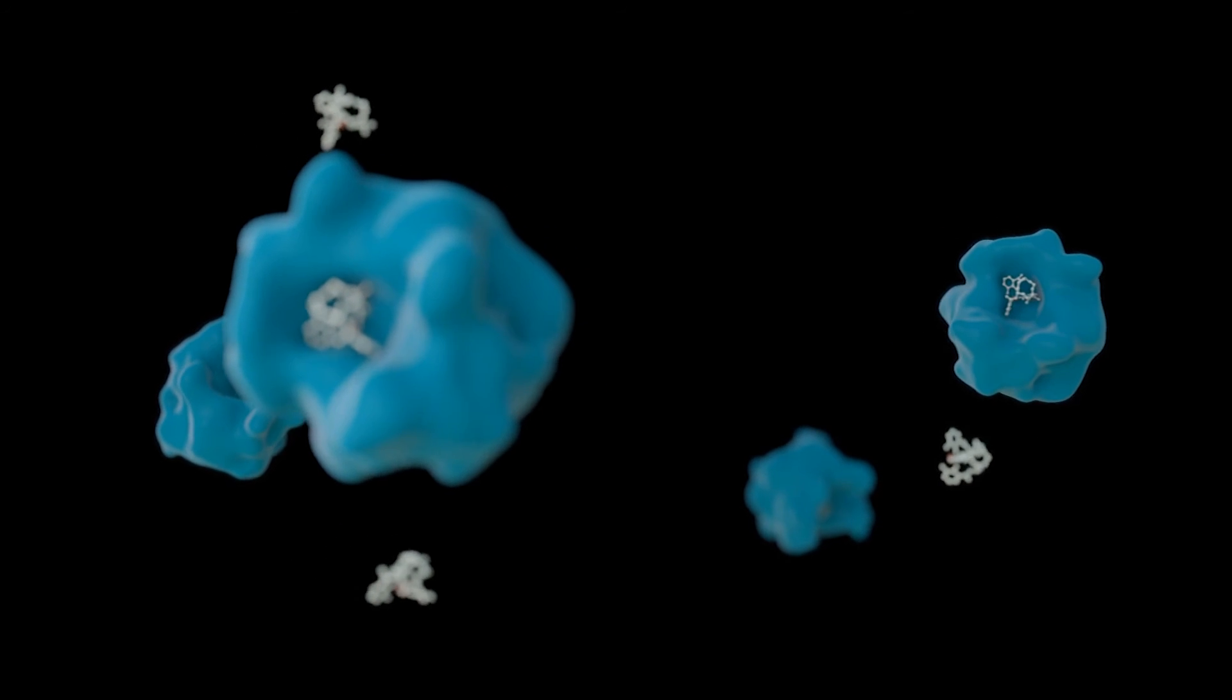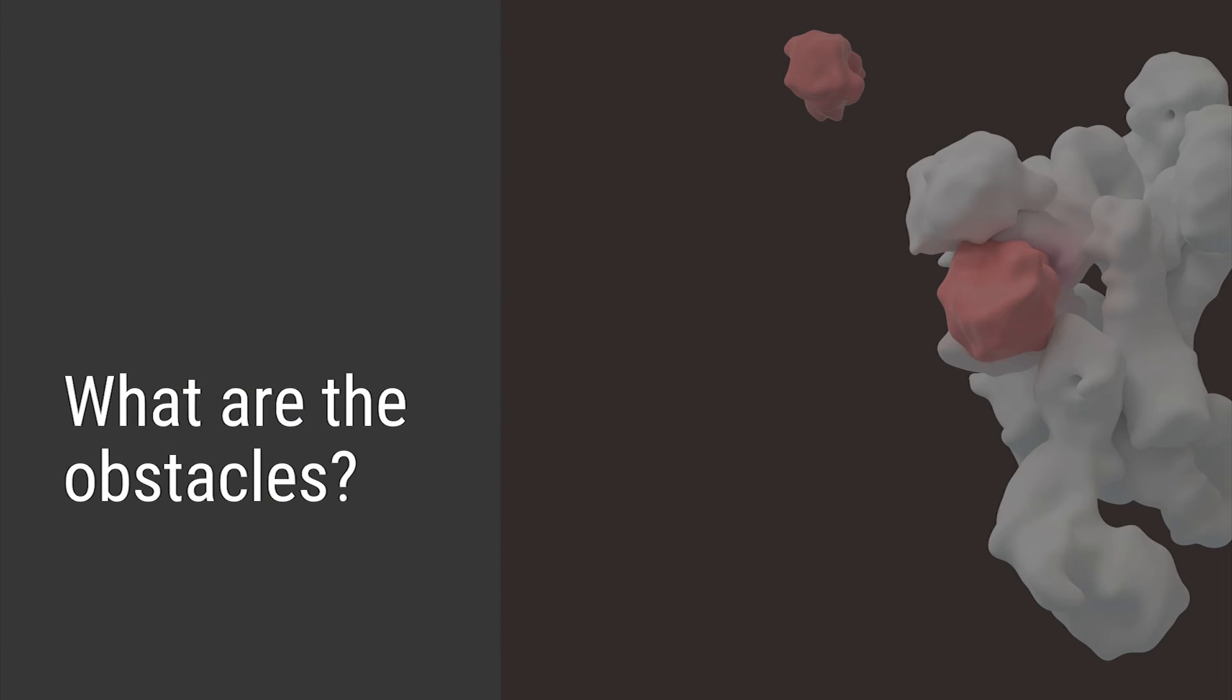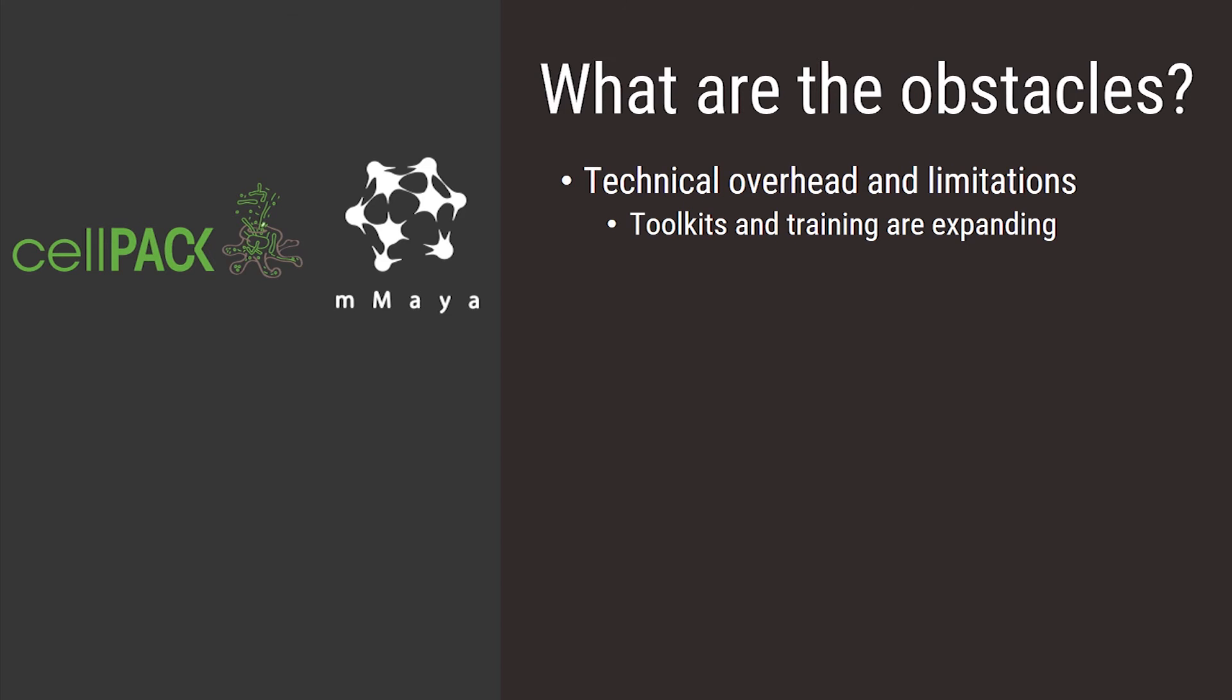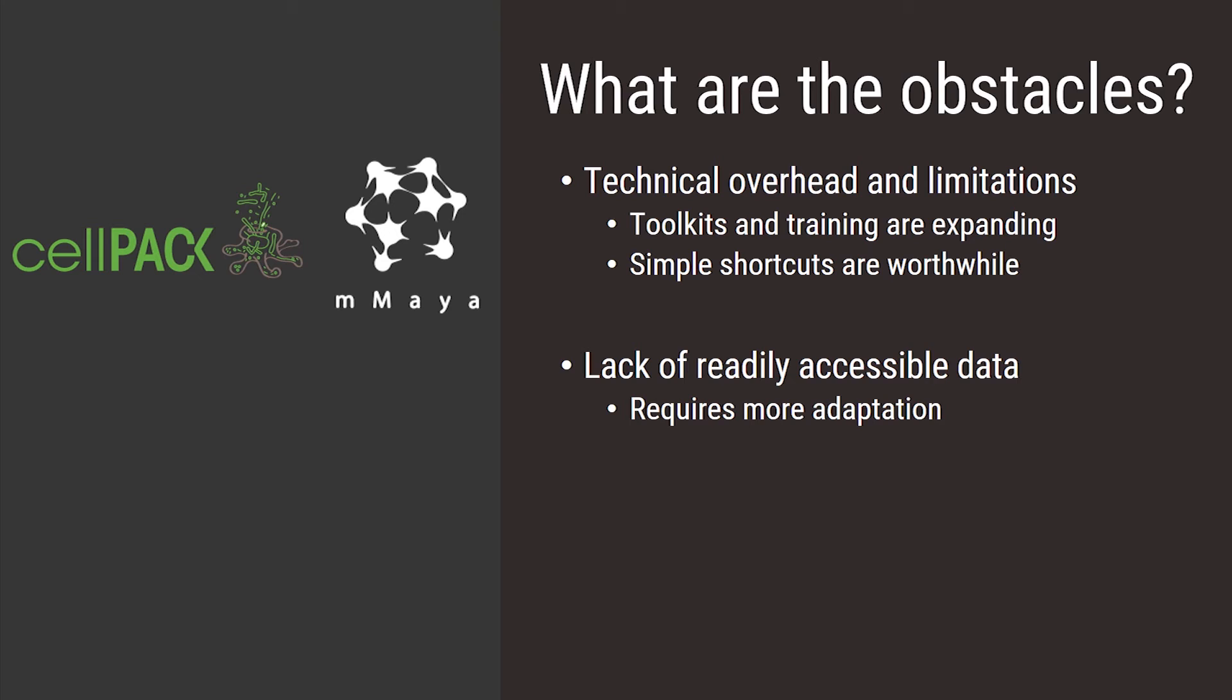I know that depicting what I'm calling dynamic realism doesn't come for free. So what are the obstacles? Well, of course there are technical limitations and overhead. It takes expertise, effort, time, and money to make molecules flexible and move randomly through crowded environments. But resources are improving quickly. I think of new tools being developed like CellPACK and new modules coming to molecular Maya. And often there are simpler shortcuts for adding behaviors that are worthwhile. I use many of these in the illustrated examples that I showed. We've also become somewhat spoiled with the accessibility of structural data, and there is dynamic data available as I talked about, molecular dynamic simulations, but it is less accessible than structural data and it requires more interpretation and adaptation.